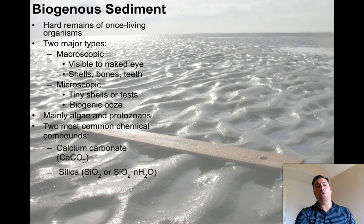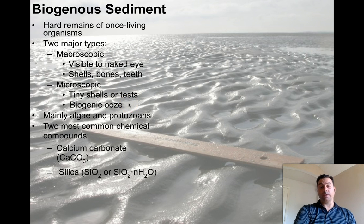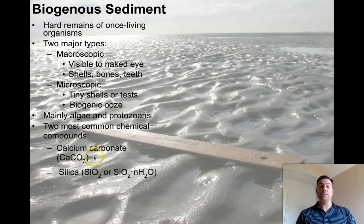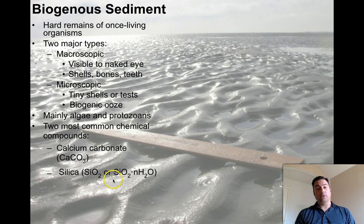Biogenous sediments are of a totally different type. There are two major kinds: macroscopic — visible to the naked eye — which are shells, bones, and teeth, basically the remains of once-living organisms. And microscopic, which are tiny shells or tests and biogenic ooze. It's mainly algae and protozoans that produce these things. The two most common compounds are calcium carbonate, which makes up reefs and limestone, and silica — SiO2, or in this case SiO2 with water fused onto it — forming a mineral called opal, or opaline quartz.